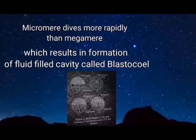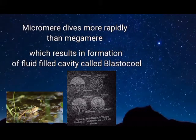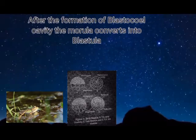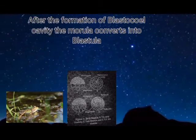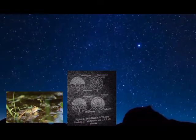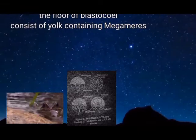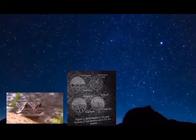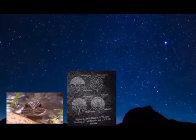Micromeres divide more rapidly than megameres, resulting in the formation of a small cavity filled with fluid, known as the blastocoel or segmentation cavity. After the formation of the blastocoel cavity, the morula converts into blastula. The floor of the blastocoel is composed of a layer of yolk-containing megameres, while the roof of the blastocoel is composed of micromeres. The blastocoel cavity contains albuminous fluid secreted by surrounding cells.